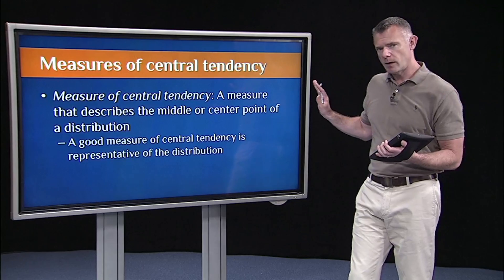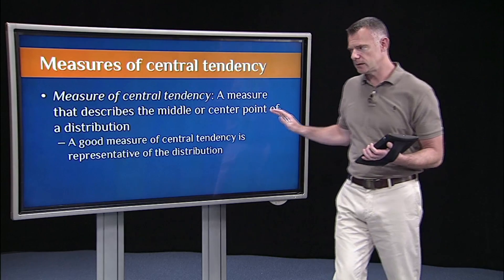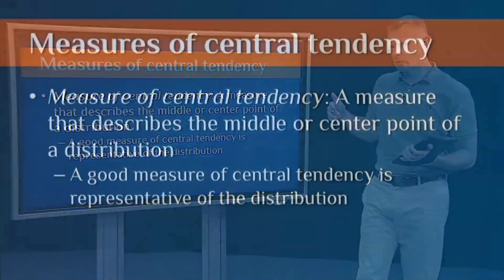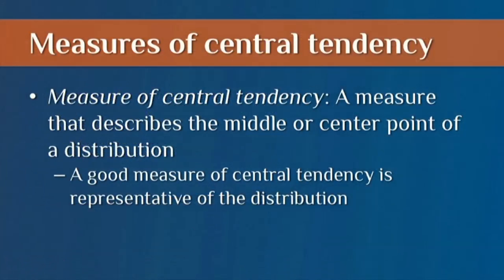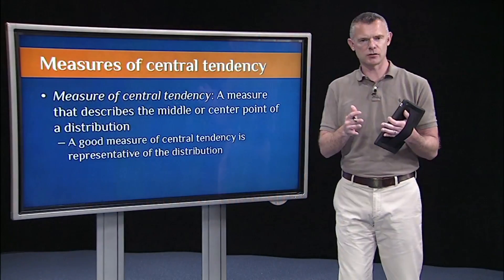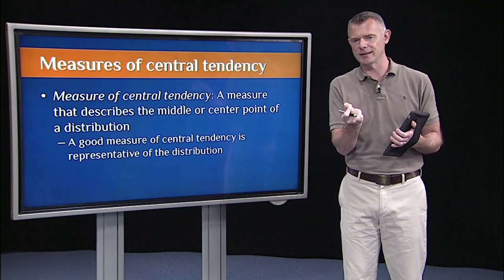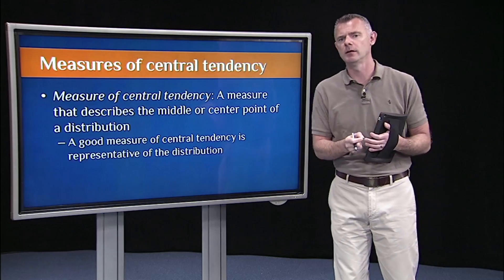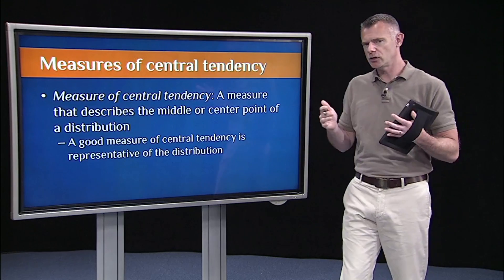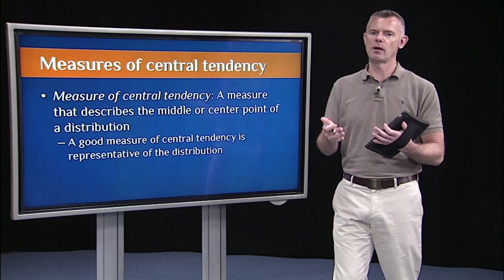To be clear, what do I mean by a measure of central tendency? It's just a measure or a summary statistic that describes the middle point, or is representative of the middle point of a distribution. So it should be representative of the distribution as a whole. Of course we can't describe the whole distribution with one number — this is just what statisticians call a point estimate — but it should do a pretty good job. It should be representative.